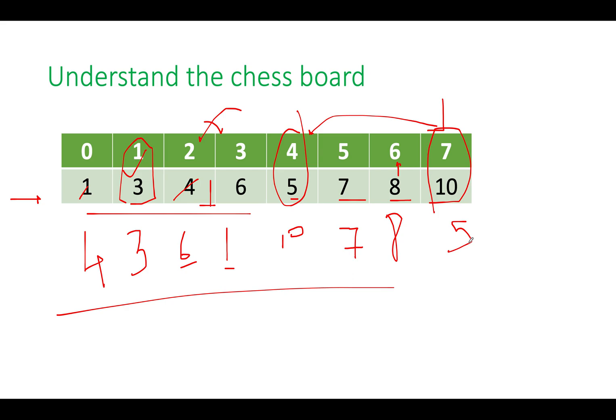And the output is 4, 3, 6, 1, 10, 7, 8, 5. There can be many other possibilities as well. But this is one of the possible answers. Now comes the question. How are you going to solve this question?